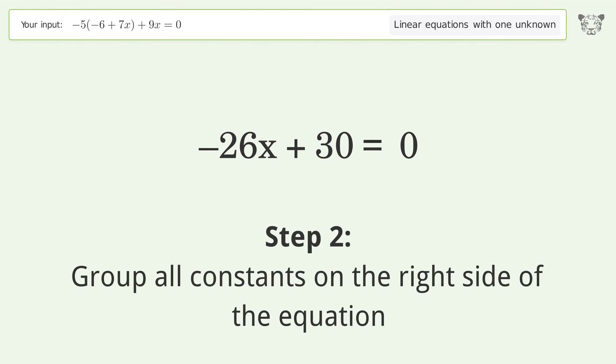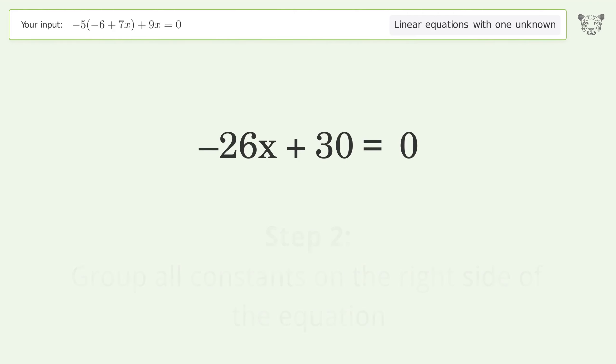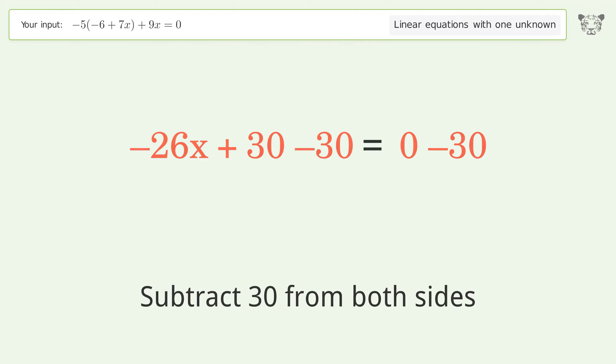Group all constants on the right side of the equation by subtracting 30 from both sides. Simplify the arithmetic.